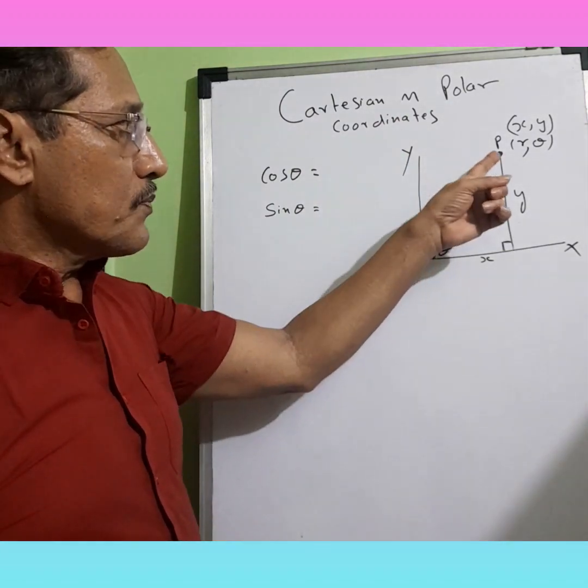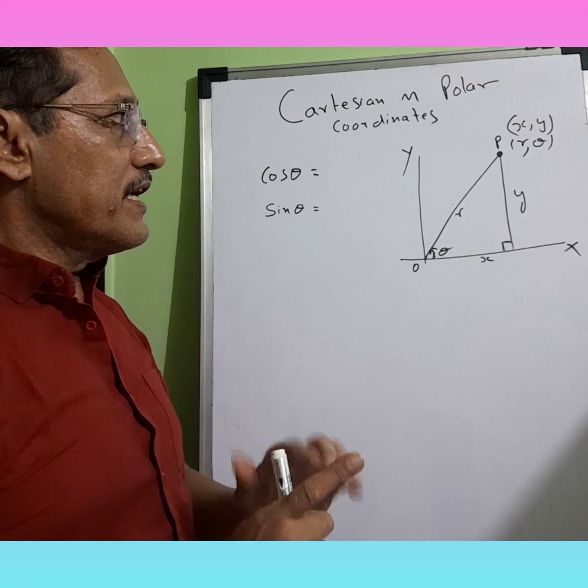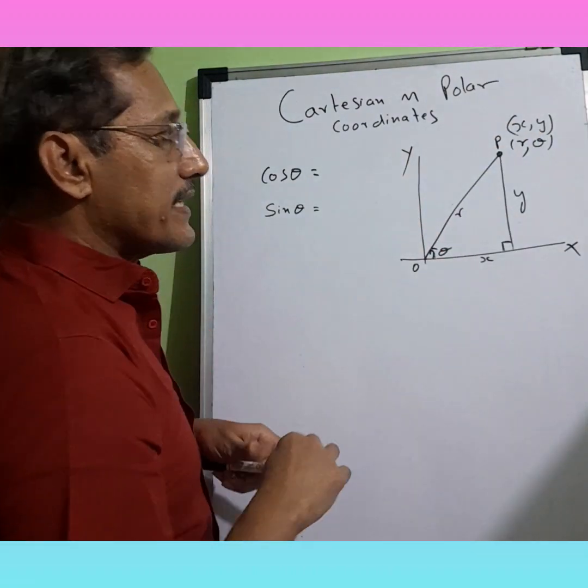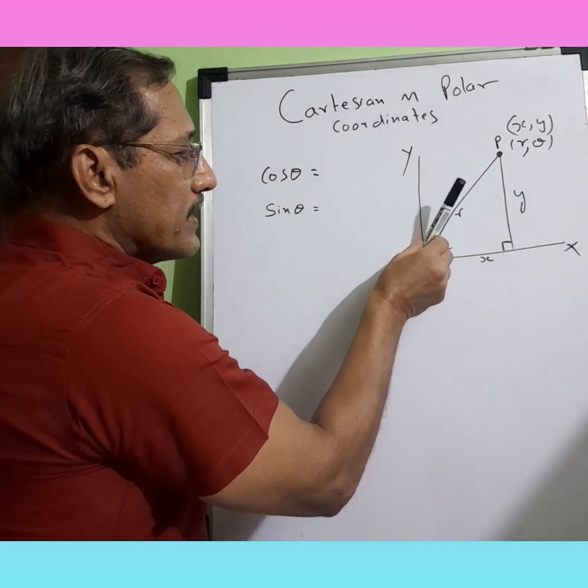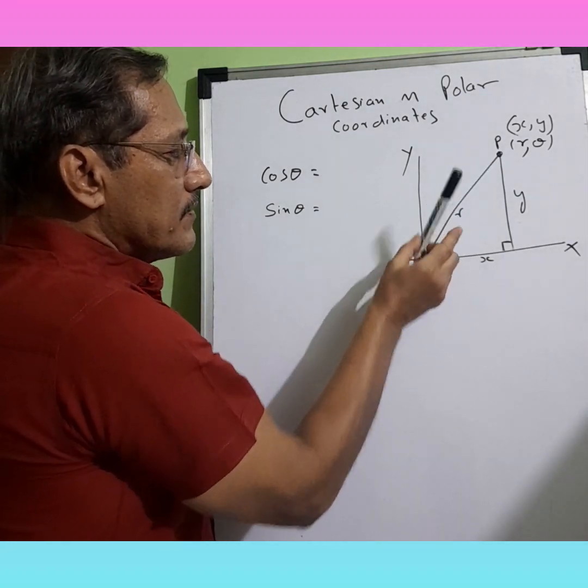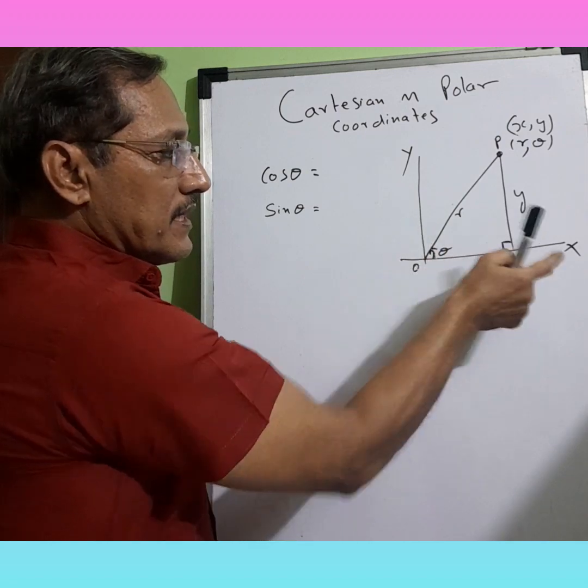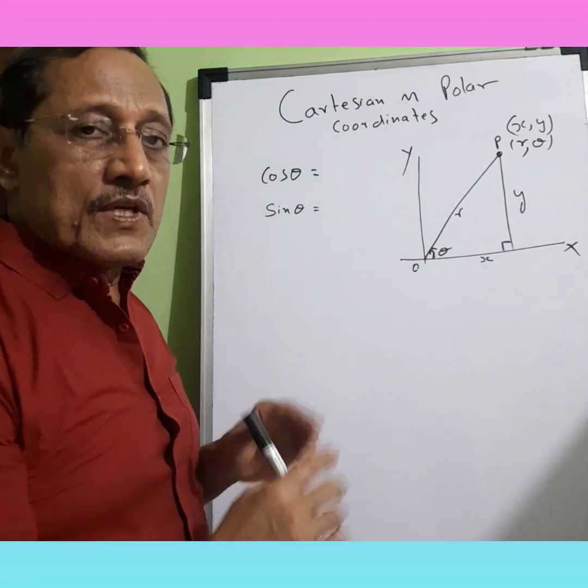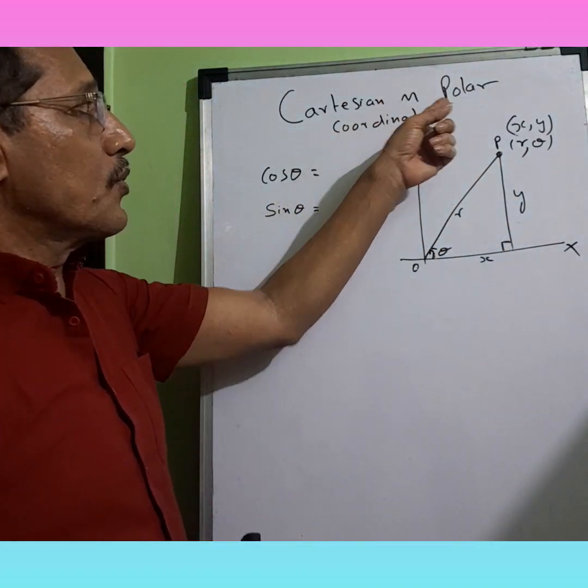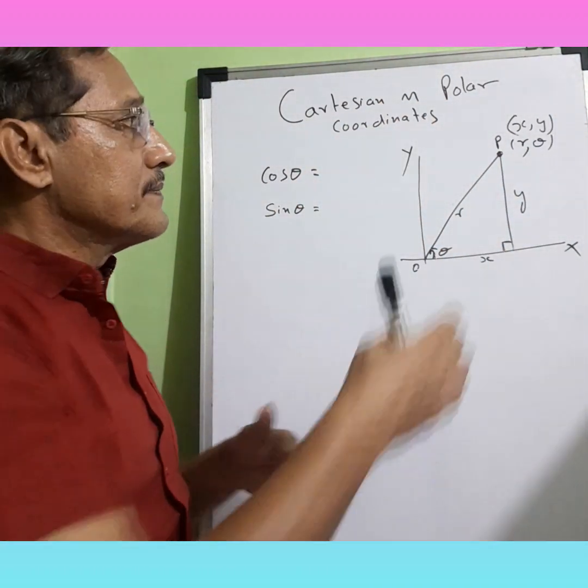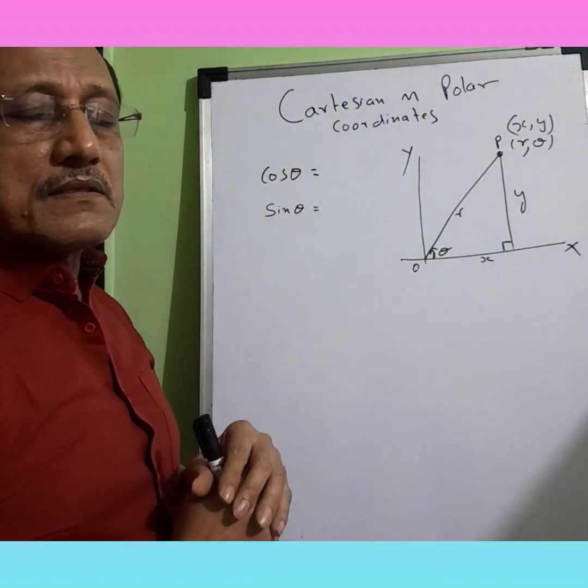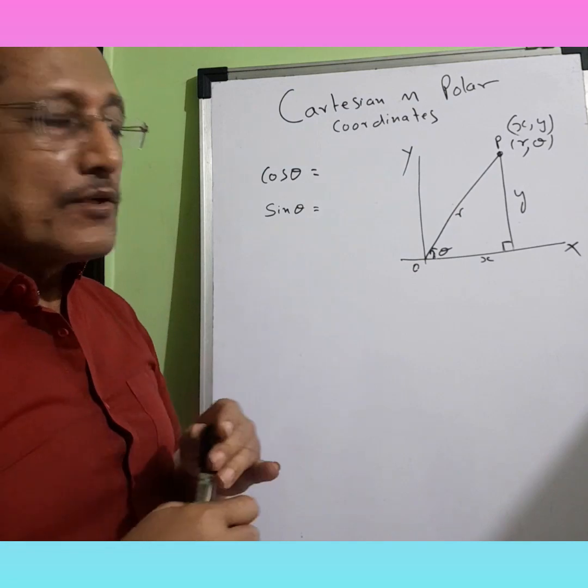Alright, so this point on a plane can be defined via X and Y, and can also be defined via distance from origin and the angle that it makes with X axis. So we have R and theta as polar coordinates. Now what's the relationship between polar coordinates and Cartesian coordinates? Let's get into it.